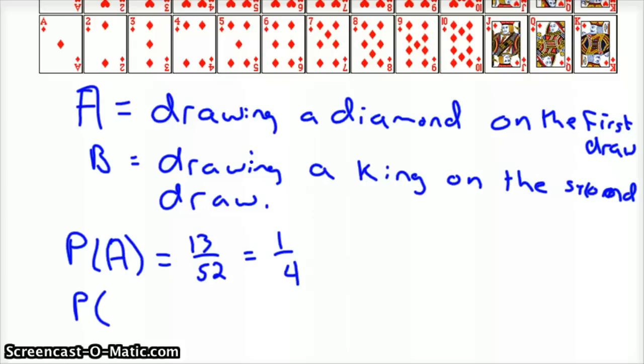And the probability of B, drawing a king on the second draw. And remember, each time we're replacing the card. We're going to look at this situation again with dependent events where we don't replace the card. But if you replace the card, shuffle it up, make sure it's fair again, there are four kings out of 52 cards, which would be one out of 13. So the probability of drawing a diamond on the first draw and a king on the second draw would be one quarter times one thirteenth, or one out of 52.